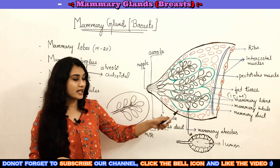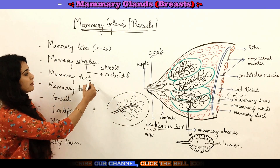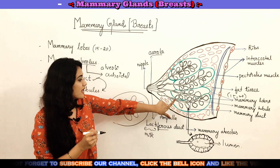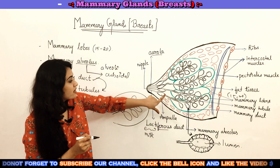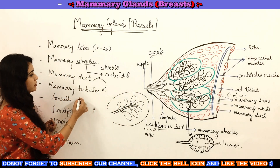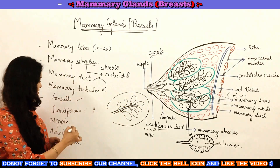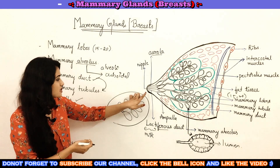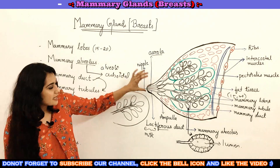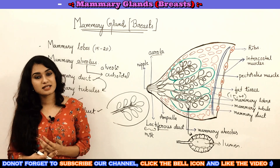In summary, milk is secreted by the alveoli from different mammary lobes, reaches the mammary duct through mammary tubules, travels to the ampulla, then through the lactiferous duct, and is sucked out by the baby.